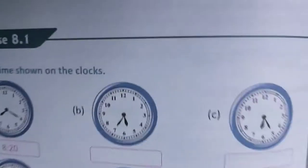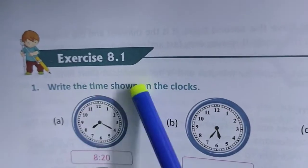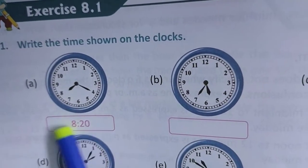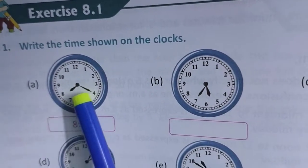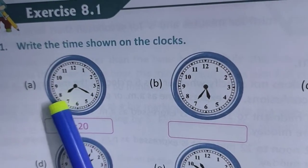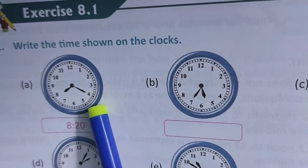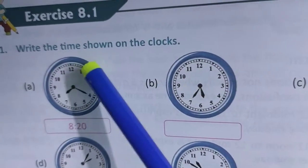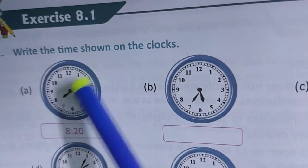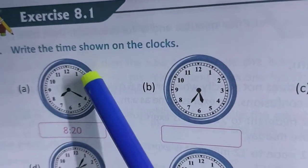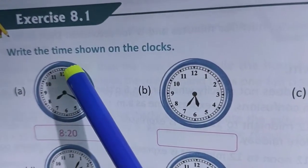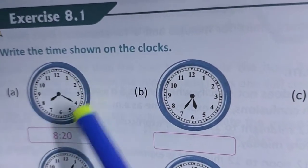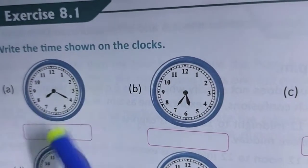Exercise 1, write the time shown on the clocks. One example is here, 8:20. Hour hand is in 8, so it is 8 and minute hand is 4. That means in each gap, in between markings are there, small markings are there, that is every minute. So in one number to another number, 5 minutes are there. So 4 is there, 4 into 5, that means 20 minutes.